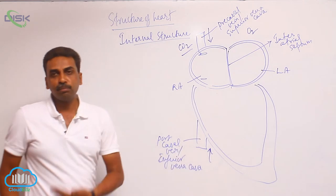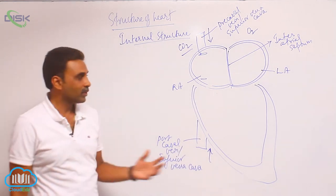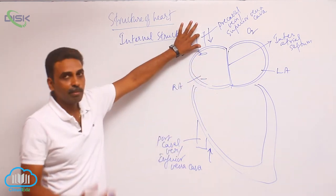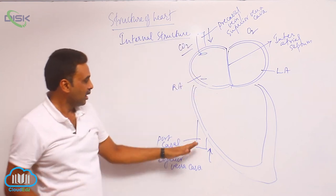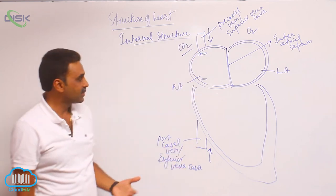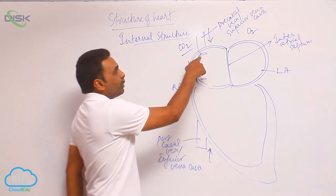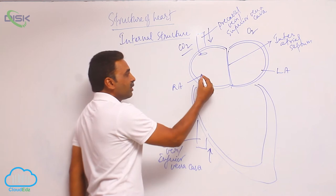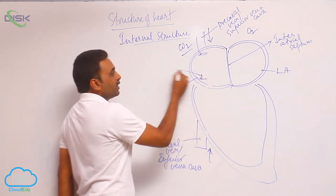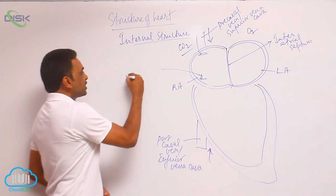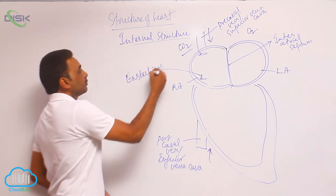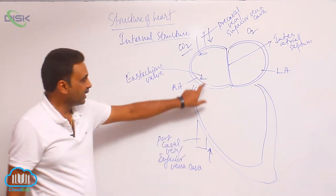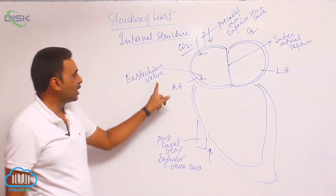The postcaval vein brings blood from the abdomen and lower limbs and opens into the right atrium. The precaval vein brings blood from some parts and the postcaval vein brings blood from the remaining parts. The opening of the precaval is not guarded by any valve, but the opening of the postcaval is guarded by a valve called the eustachian valve.